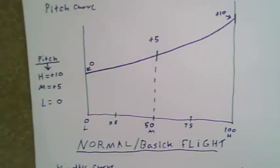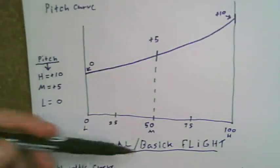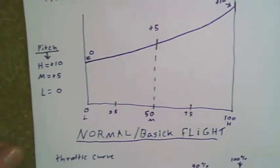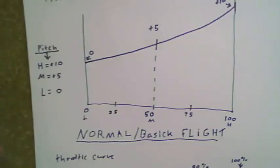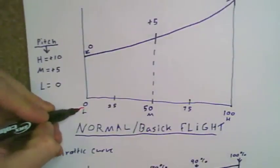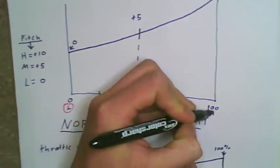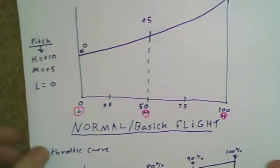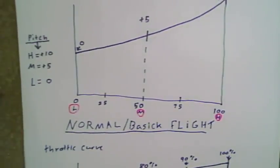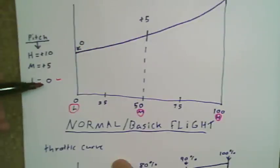So to start off, here we've got what our pitch curve should look like. If you get into your pitch curve menu, we've got the normal pitch curve. You have your three different positions on your radio: the low position, the medium, and the high position. At the low position, we should have a zero degree of pitch.